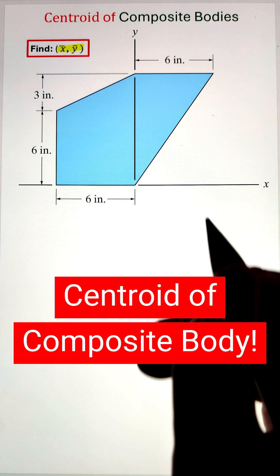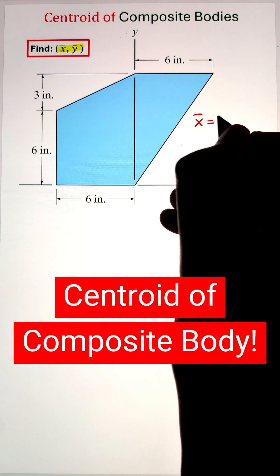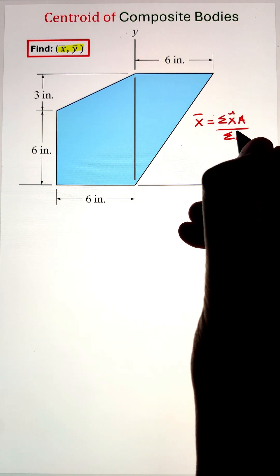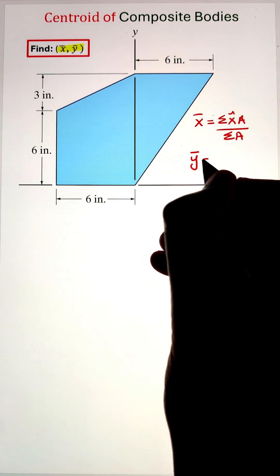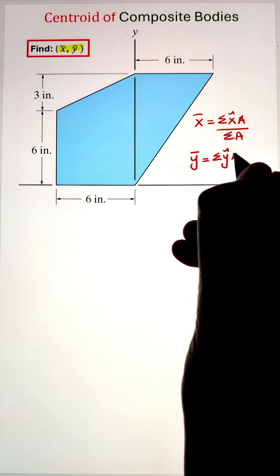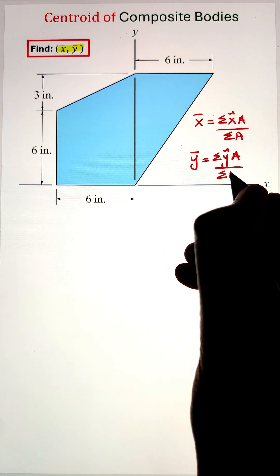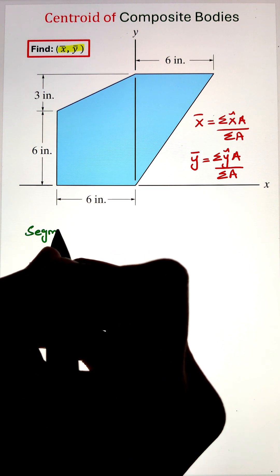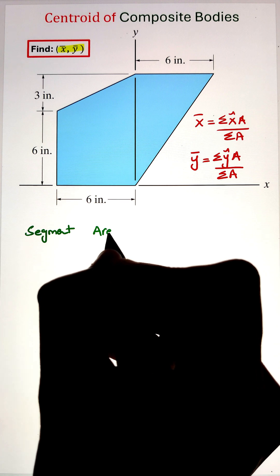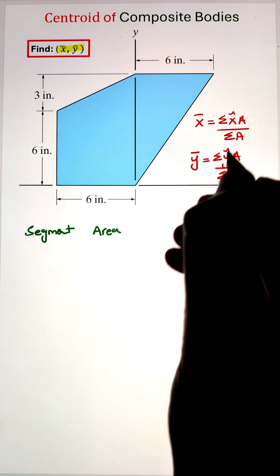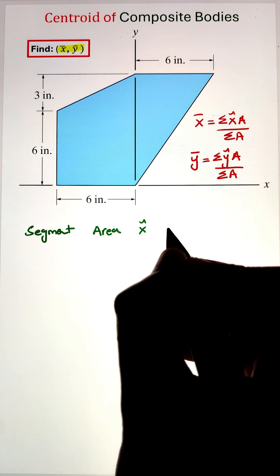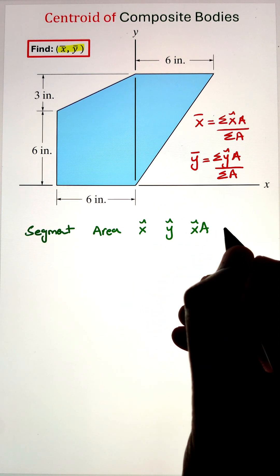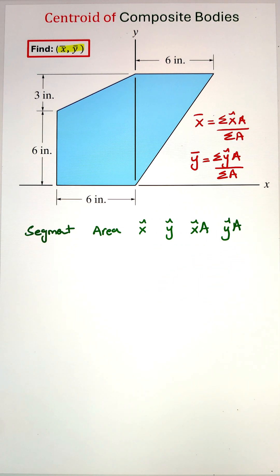In order to find the centroid of a composite body, x̄ and ȳ, we first have to divide that composite shape into simple geometrical shapes whose centroids are known. Then we calculate the area of those individual shapes and multiply that area with the centroidal value, adding them up for all the simple geometrical shapes and dividing it with the total area of the composite object. This allows us to identify the centroid of the composite structure.